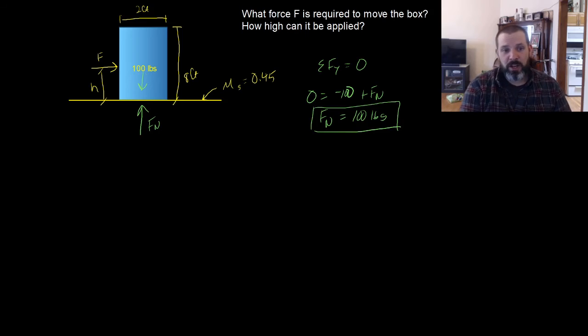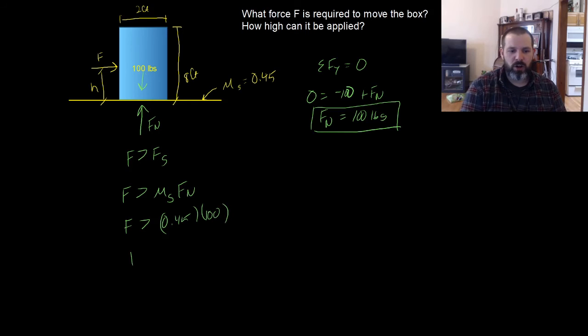Now, we know that if we want to slide the box, the force we apply has to exceed the force from static friction. If we sum the forces in x, they're not going to equal zero this time. The force has to be greater than F_s. F_s is defined as μ_s times the normal force. This force has to be greater than 0.45 times 100. So our force must be greater than 45 pounds.